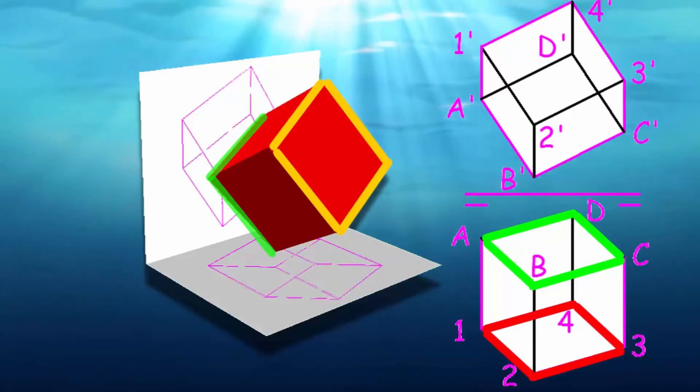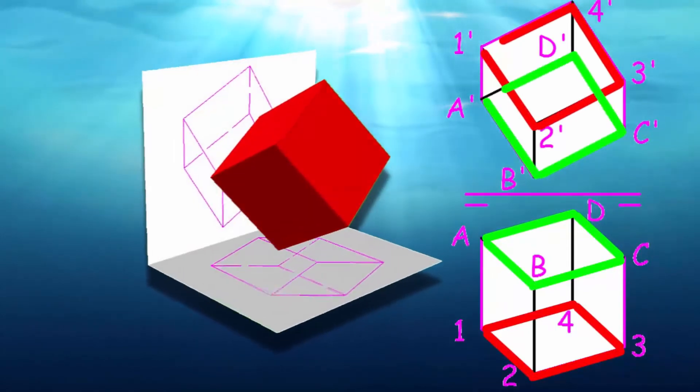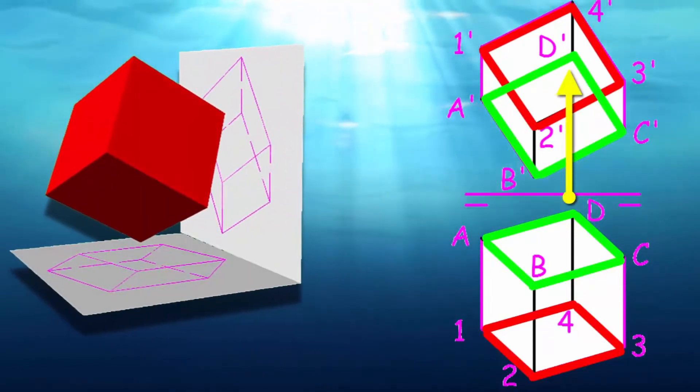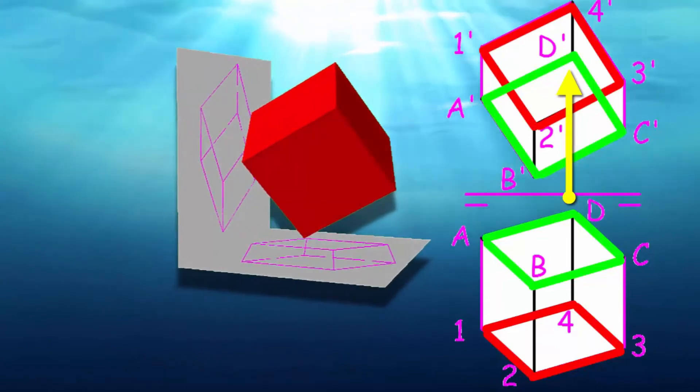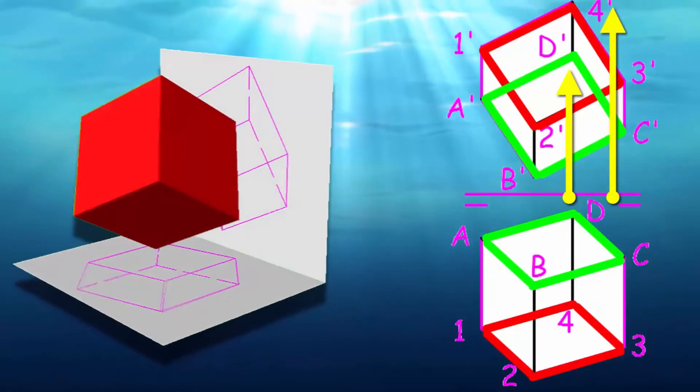To see what is seen in the top view, you look at what vertex has greater height in the vertical projection. Face ABCD, point D has the greatest height. In face 1234, it is point 4.